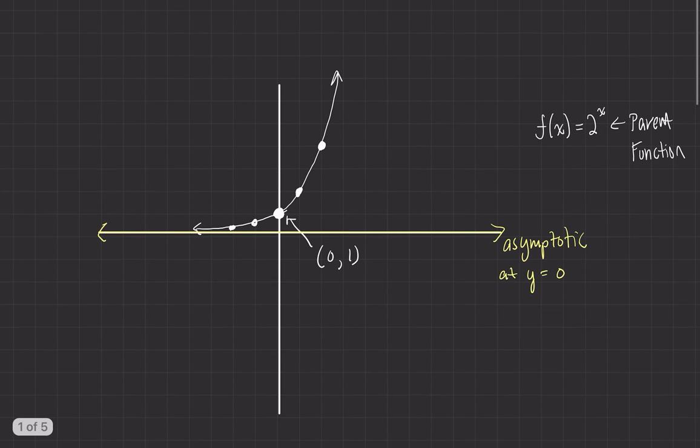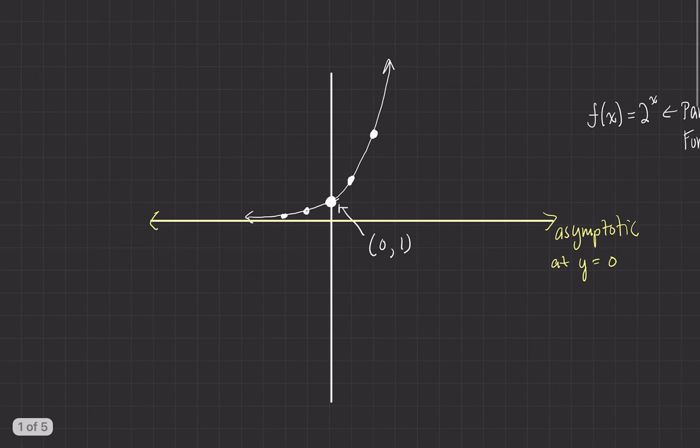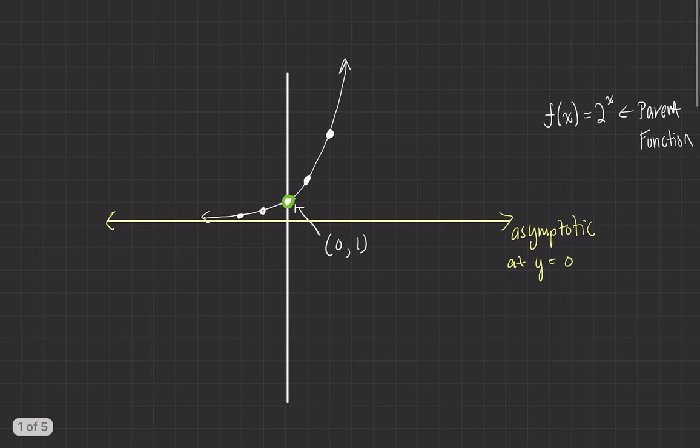But if we go back to our graph, if our base is positive, we can also say another common thing that happens, that everything we're dealing with will typically cross 0,1, as long as we don't transform it by sliding it or reflecting it over the x-axis.